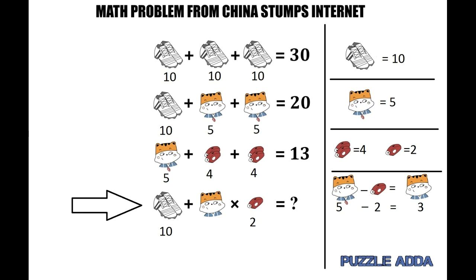Taking BODMAS into consideration, we first multiply then add. The cat has a value of 3 times 2, which is 6, plus 10, which gives the value 16. So 16 is the correct solution of this puzzle.